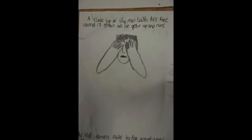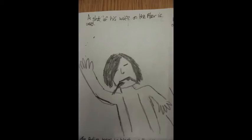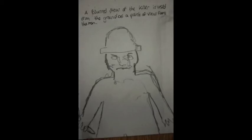A medium shot is used as the man suddenly realises what's happened and stops running. A close-up is used of the man's face to show his realisation. A medium shot is used as the man runs back to his wife. A medium close-up is used to show how his wife has died. A close-up is used as the man goes to check his wife's pulse. A medium shot is then used of the woman on the floor as her husband gets hit over the head with a large piece of wood. A medium shot is used to show the killer with a blurred focus.